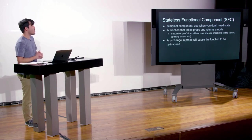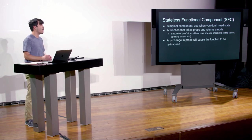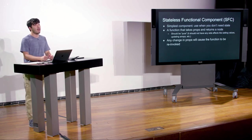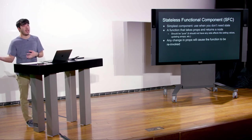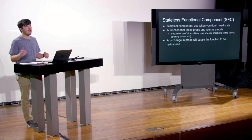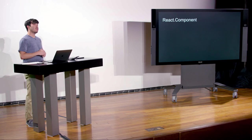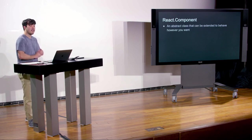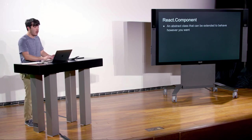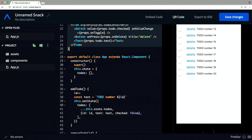When the function re-invokes and returns nodes, React compares those nodes to what it has in its virtual DOM and replaces what's needed. On the other side, we have React.Component — provided by the React library and implemented for you. It's an abstract class that can be extended to behave however you want. In our examples we've been creating a class and extending React.Component. These have additional features that stateless functional components do not.